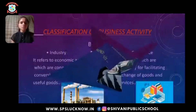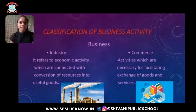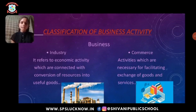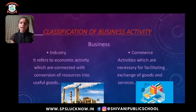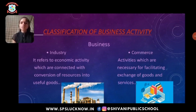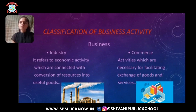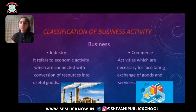Let's move to the next topic: classification of business activity. Businesses are classified into two main parts — industry and commerce. Industry refers to an economic activity connected with the conversion of resources into useful goods, meaning industries convert raw materials into finished goods. Activities necessary for facilitating exchange of goods and services are termed commerce. Commerce is a boon for business in the modern era, as it facilitates many facilities for improving business.